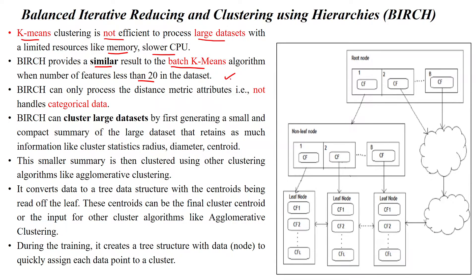We can use BIRCH to get results similar to the batch k-means algorithm. BIRCH can only process distance metric attributes — that means it will use Euclidean distance, Manhattan distance, or Minkowski distance metrics. So it cannot handle categorical data; it should have only numerical data in the given dataset. If we have categorical data, we have to apply label encoding for the given feature, or otherwise we have to drop that feature.